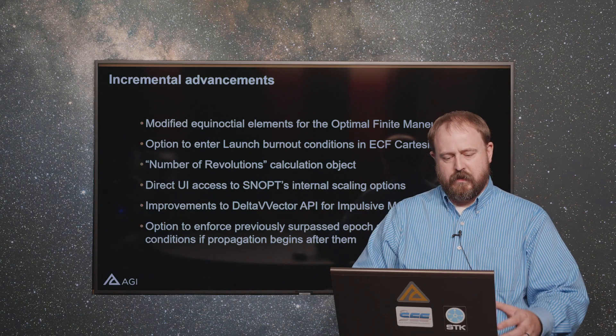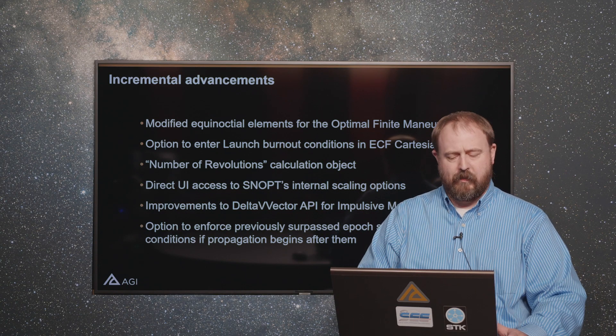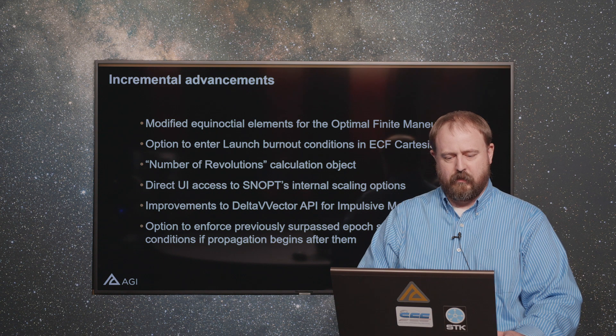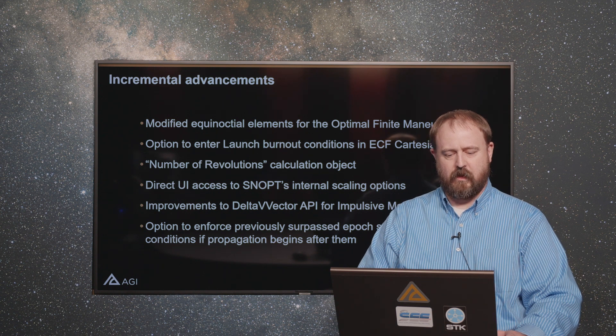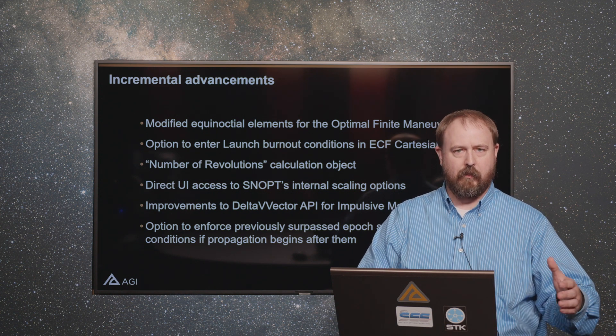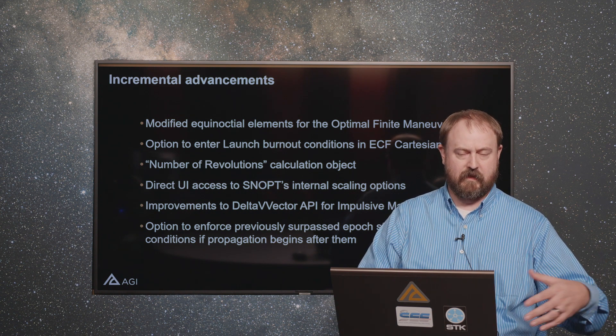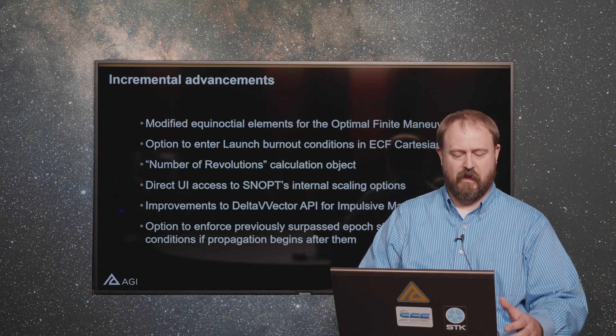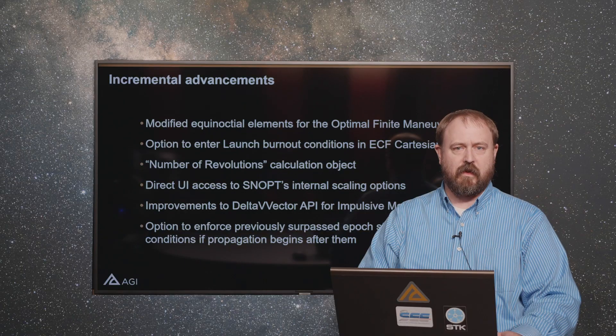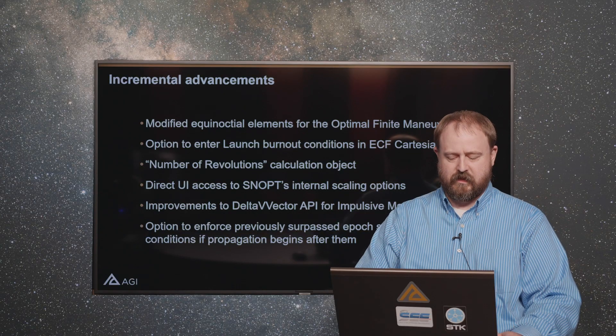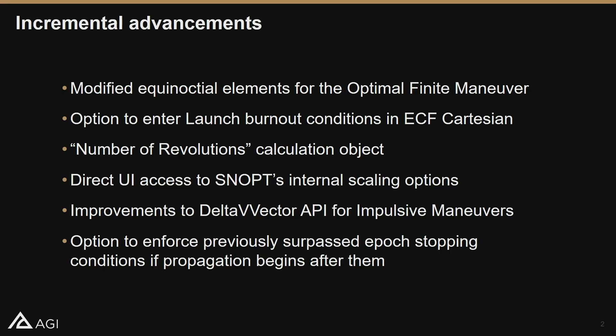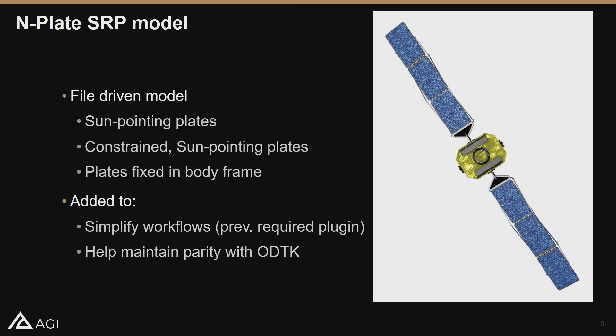For situations where you might have a stopping condition on a propagate segment or a maneuver that's already been previously surpassed — say, for example, an epoch stopping condition — maybe you don't want to start propagation if that's already happened. So just a simple improvement there. Those are the incremental things, and now a few bigger items.